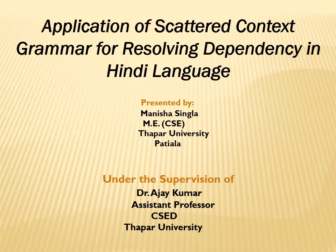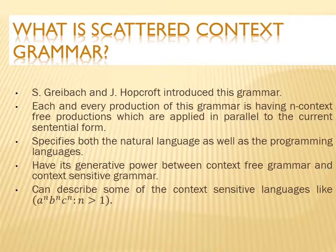To start with, what is scattered context grammar? Scattered context grammar is the grammar which is first introduced by S3Pack and J. Hopcroft. In this grammar, each and every production is having N context-free productions which are to be applied in parallel to the current sentential form.